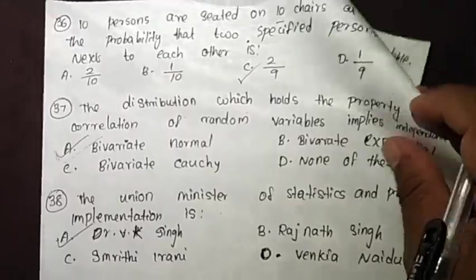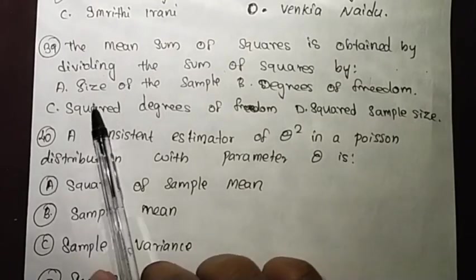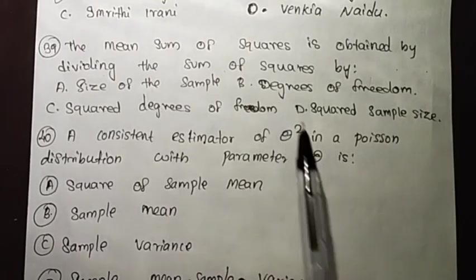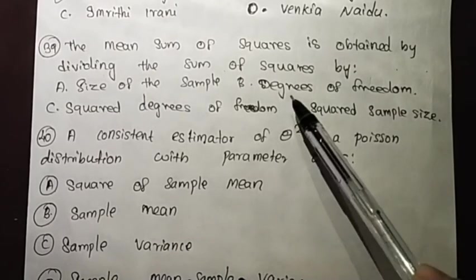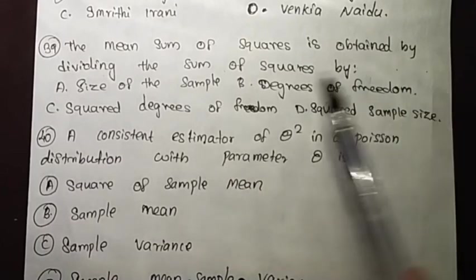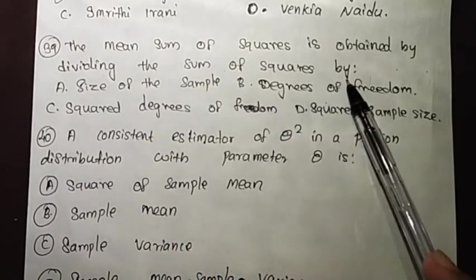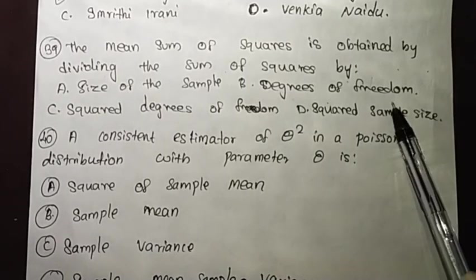The mean square is obtained by dividing the sum of squares by the degree of freedom.